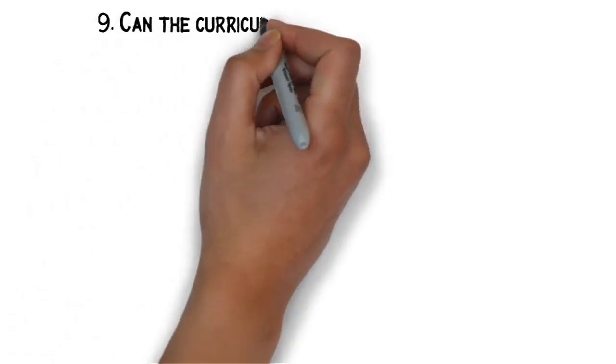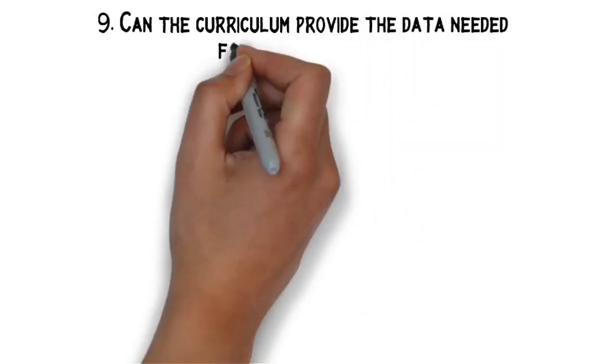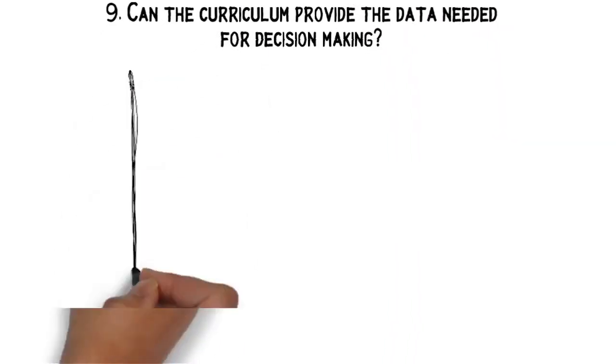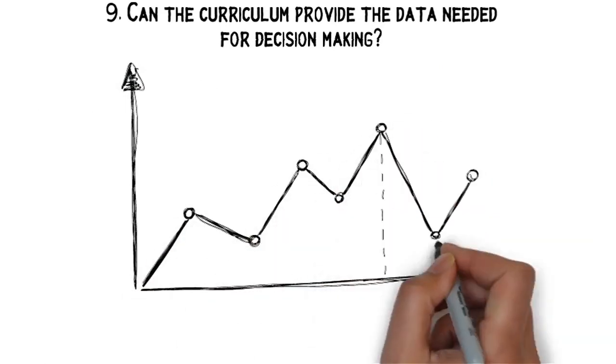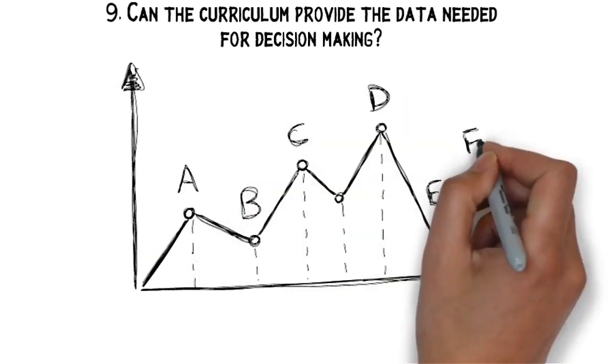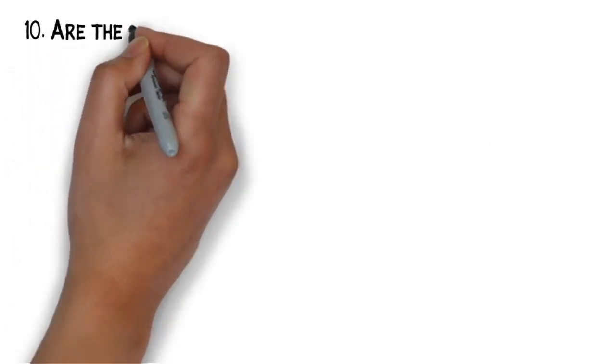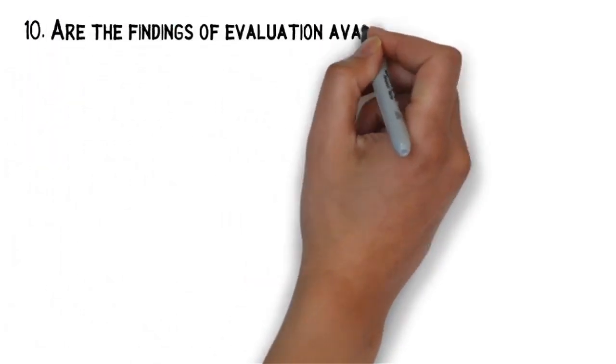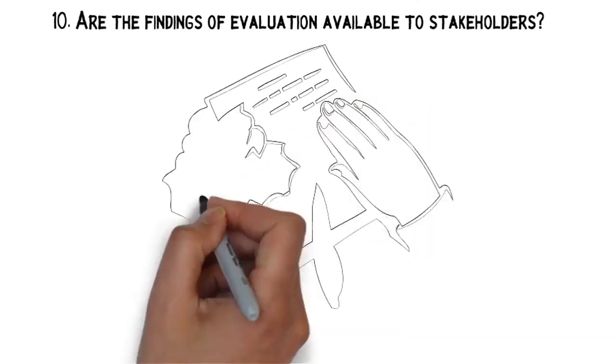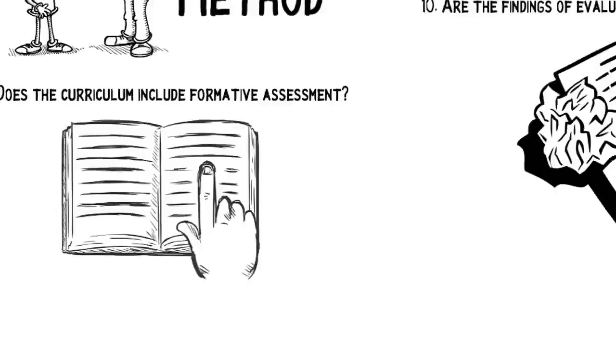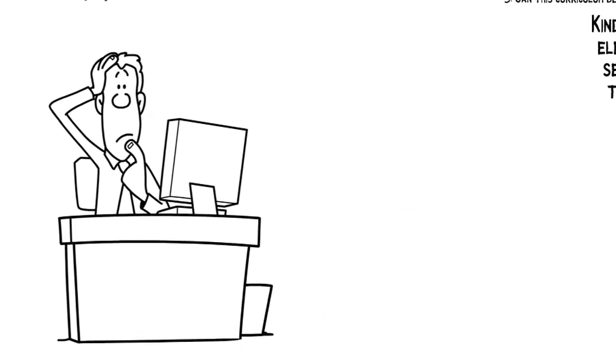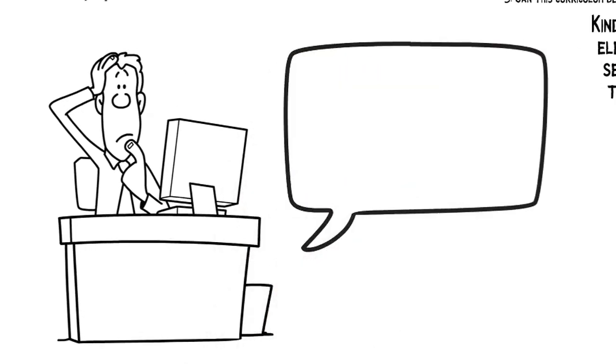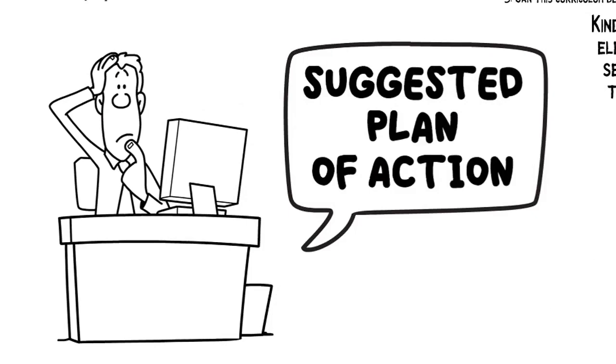Number nine, the curriculum provide the data needed for decision-making. The system encourages learners' participation in corporate decision-making. Number ten, are the findings of evaluation available to stakeholders? It should be feasible to implement. Regardless of the methods and materials evaluation will utilize, a suggested plan of action for the process of curriculum evaluation is introduced.